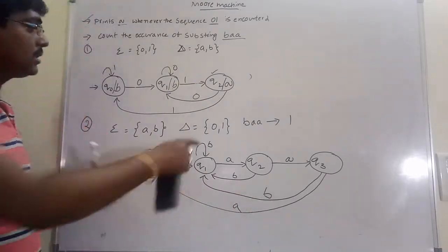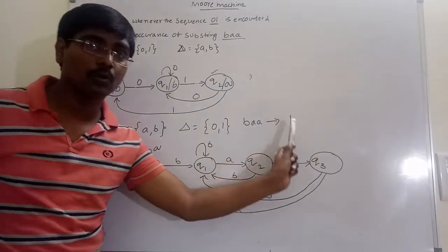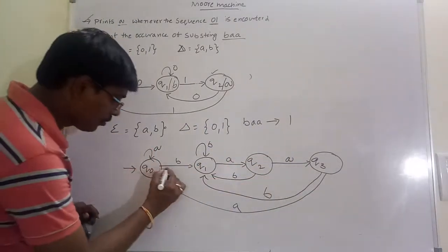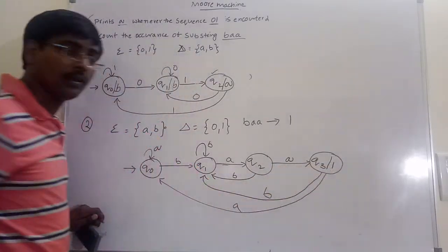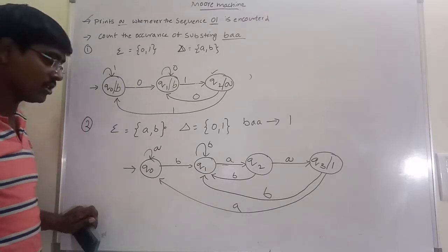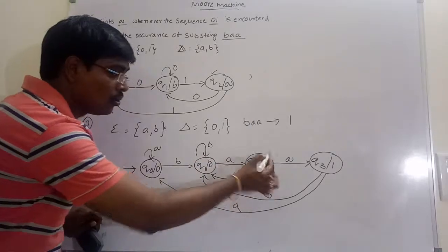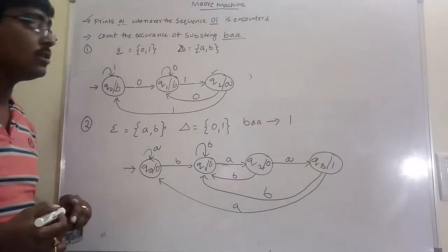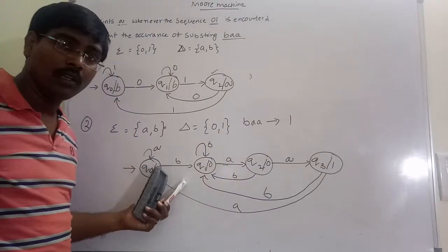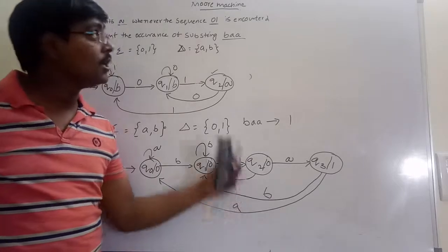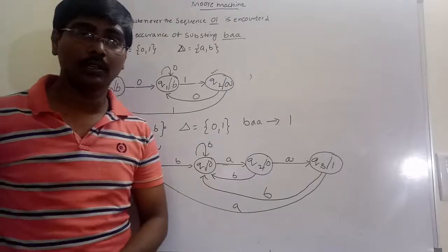Now our goal is: whenever BAA occurs, it produces output 1. BAA occurs at state Q3, so the output at Q3 is 1; in all remaining cases the output is 0. It is very easy to construct a Moore machine once construction of the DFA is well known. In the next session we will discuss some more examples of how to construct a Moore machine. Thank you.